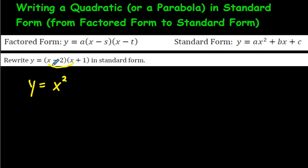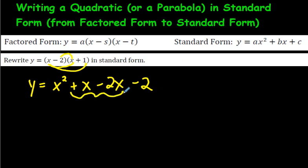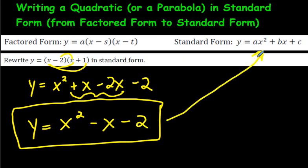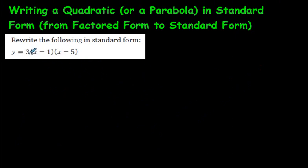We're going to get this into standard form by multiplying it all out. x times x is x squared. x times 1 is positive x. Negative 2 times x is negative 2x. Negative 2 times 1 is negative 2. Putting the like terms together: x minus 2x is negative x, minus 2. So we end up with x squared minus x minus 2 — a quadratic trinomial in standard form.